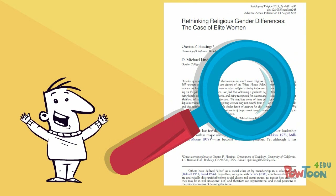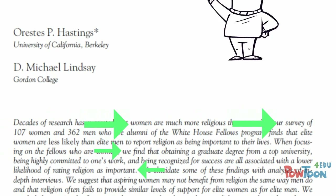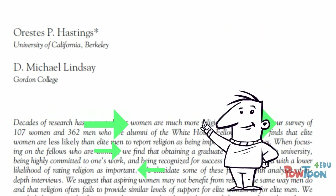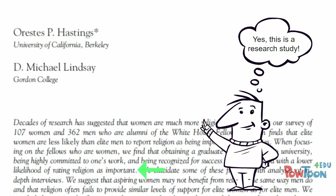First, Jacob recommends always reading the abstract first. A good abstract will highlight the research question posed in the study, the methods used, and the results. While the abstract alone will not provide enough information to critique the work, it does help you get a sense of whether or not the information presented aligns with your research needs, and whether or not research is even being presented.